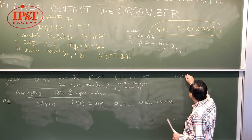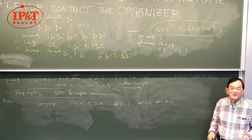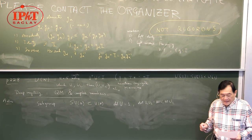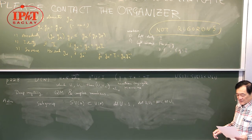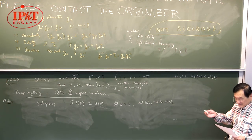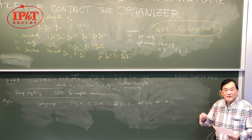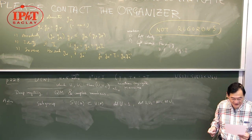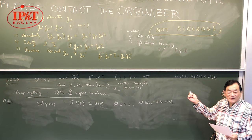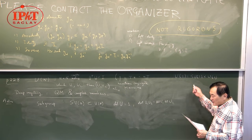SU(N) plays a very important role in physics. Physicists often write U(2) = SU(2)×U(1). The Weinberg-Salam model, the standard model, is based on SU(2)×U(1) — the unification of electromagnetism and weak interaction. We also have the strong interaction based on SU(3), quantum chromodynamics. People use SU(5) as grand unified theories. However, this statement U(2) = SU(2)×U(1) is, strictly speaking, not correct at the group level.